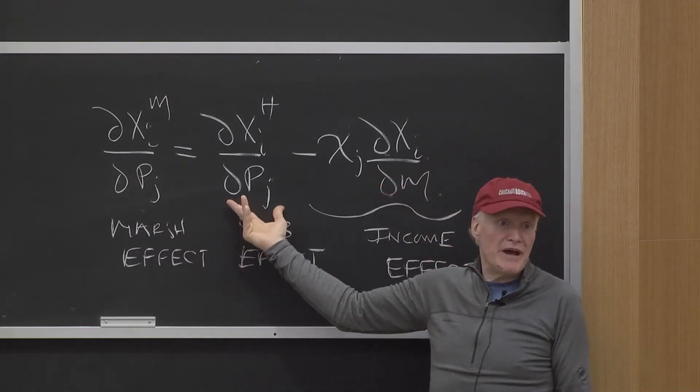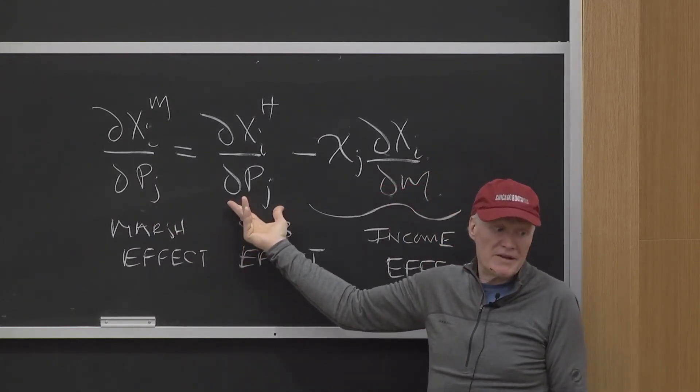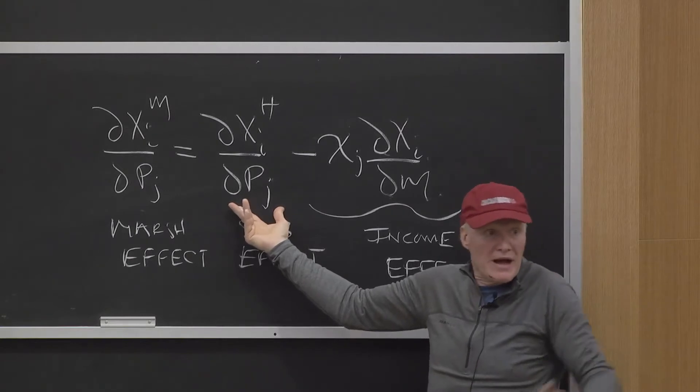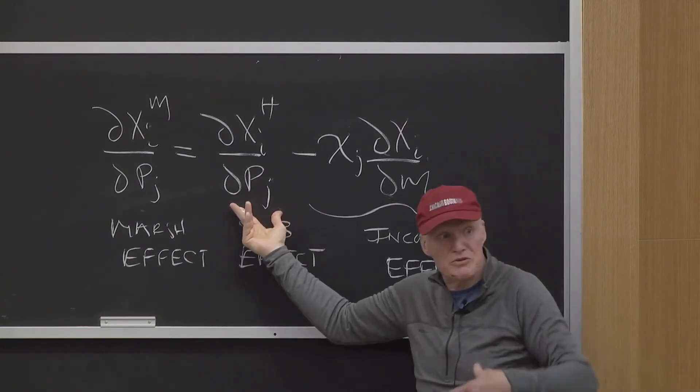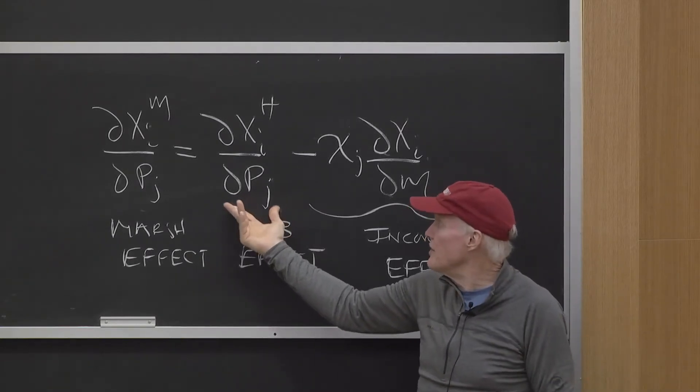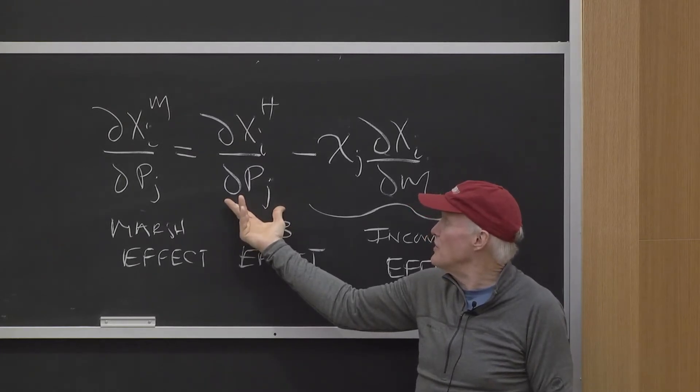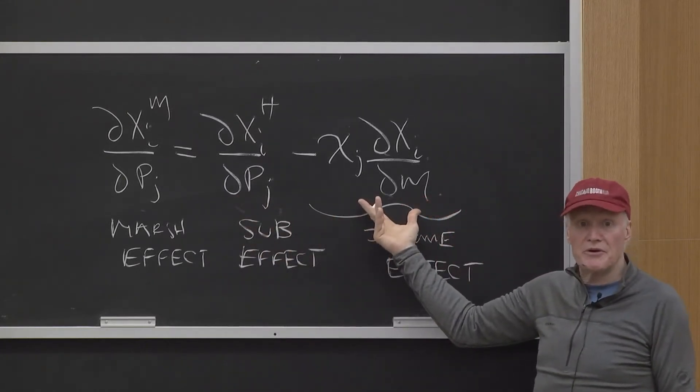it's going to have a substitution effect for I. Now, when I say substitution effect, that could either be a complementarity relationship or a substitution relationship depending on the goods. That's the response I would get holding utility constant. But there's a separate income term.